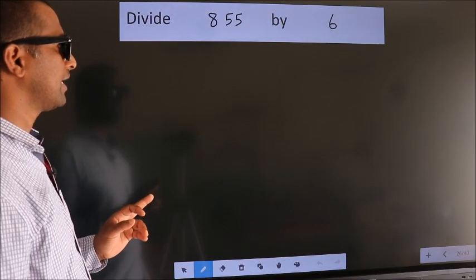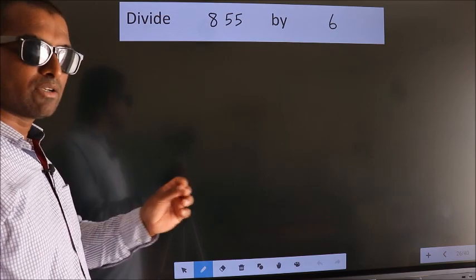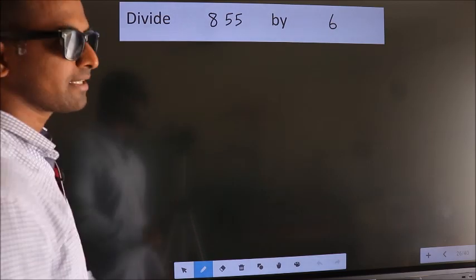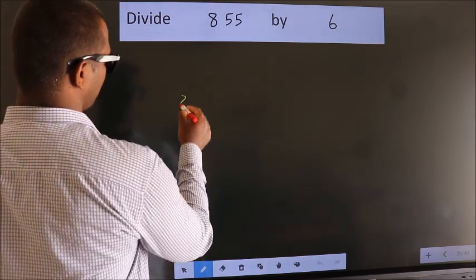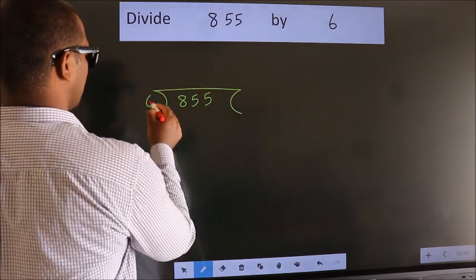Divide 855 by 6. To do this division, we should frame it in this way. 855 here, 6 here.